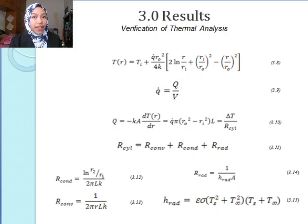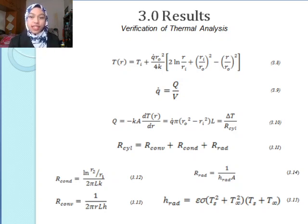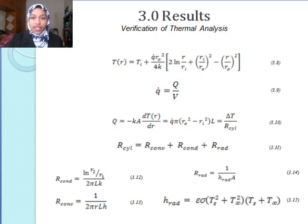The analytical calculation assumes that we have the same inner temperature as in the simulation. Further studies must be made in order to get more accurate calculations. Equation 3.9 shows the heat generation rate, whereas Equations 3.10 to 3.15 show the heat transfer due to the temperature gradient divided by the resistivity of the cylinder.